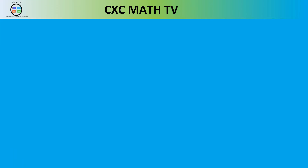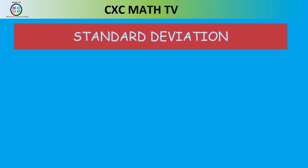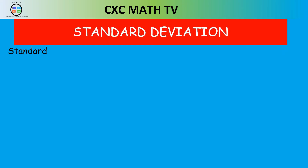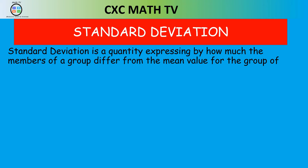Now let's talk about standard deviation. Standard deviation is a quantity expressing by how much the members of a group differ from the mean value. It is given by two formulas. For raw data: σ = √[Σ(xᵢ − x̄)² / (n−1)]. For grouped data: σ = √[(Σfx² − (Σfx)²/n) / (n−1)]. The more you practice, the easier these become.